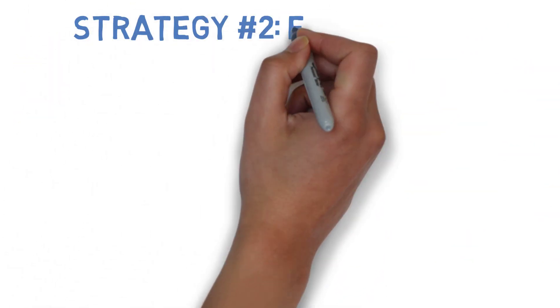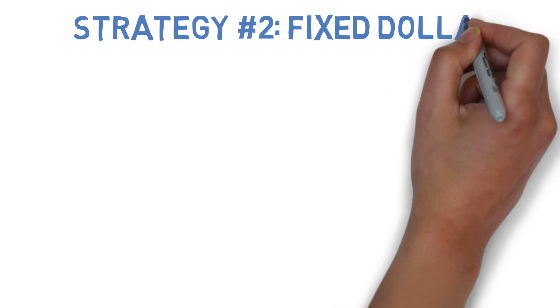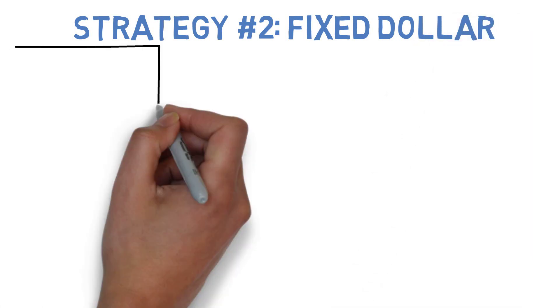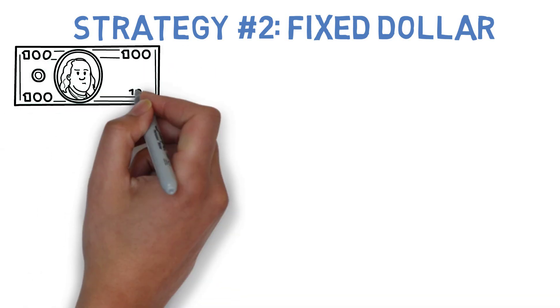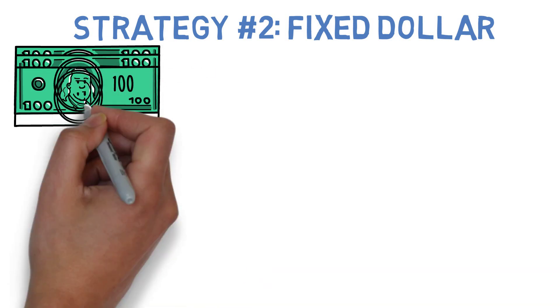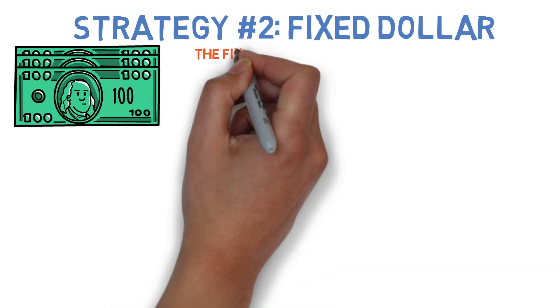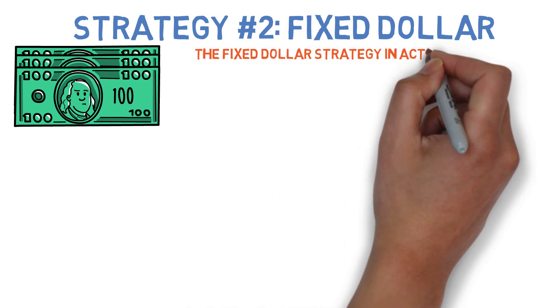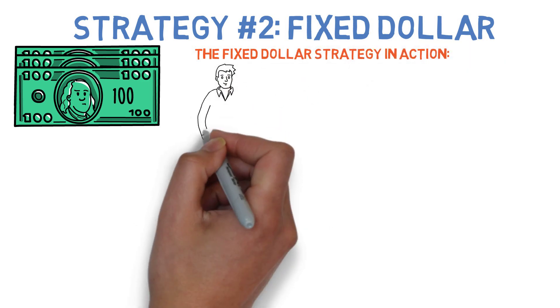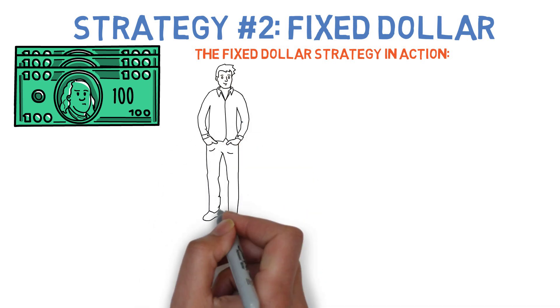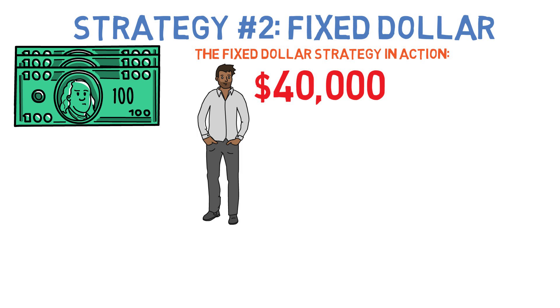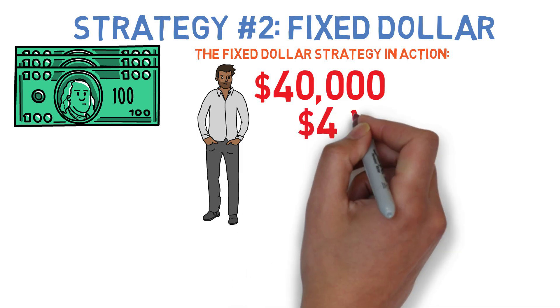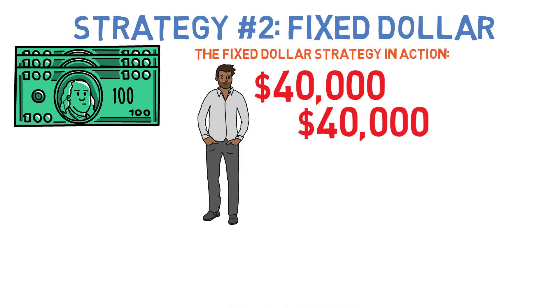The second retirement withdrawal strategy that I'm going to cover today is the fixed dollar withdrawal strategy. This is exactly what it sounds like. You begin by withdrawing a certain dollar amount from your nest egg every single month and keep withdrawing that amount throughout your retirement. So if John had been living on this strategy in retirement he still has a million dollars saved and still wants to live on $40,000 a year but this time there's no adjustments for inflation. He withdraws $40,000 in his first year retirement, $40,000 in the second, and so on and so forth.